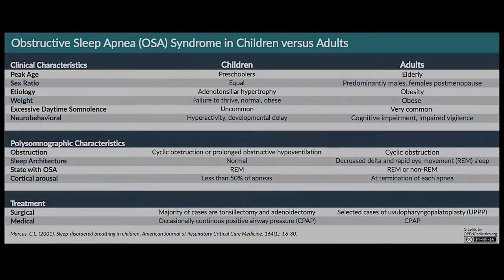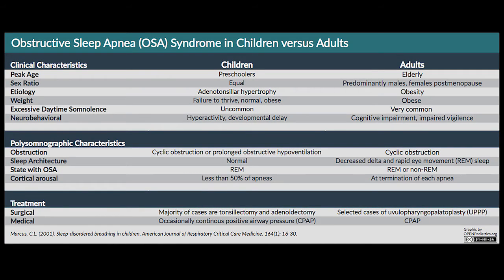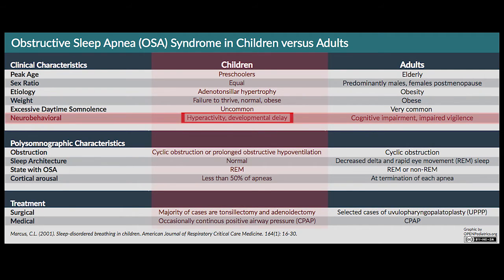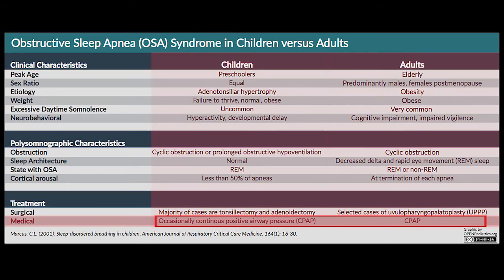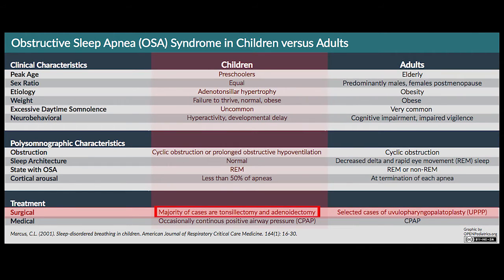Let's compare a few features of obstructive sleep apnea in children versus adults. In adults, most patients are obese, whereas in kids they can be underweight, normal weight, or overweight. Kids with obstructive sleep apnea can be hyperactive, whereas adults are usually somnolent. The treatment also differs: we use CPAP in both populations, but for surgical treatment, kids usually have a tonsillectomy and adenoidectomy, whereas adults will have a uvulopalatopharyngoplasty.